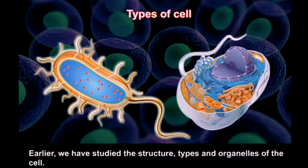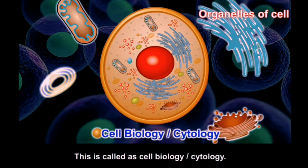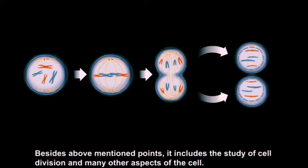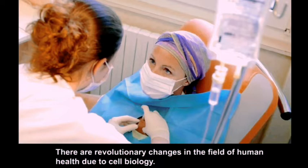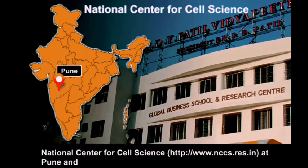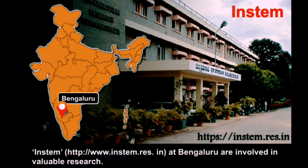The study of cell structure, types, organelles, cell division, and many other aspects of the cell is called cell biology or cytology. There are revolutionary changes in the field of human health due to cell biology research. Institutes specially dedicated for research on cells have been established at Pune and Bangalore — the National Center for Cell Science (NCCS) at Pune (www.nccs.res.in) and inStem at Bangalore.